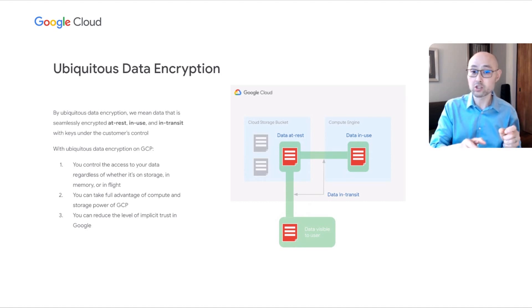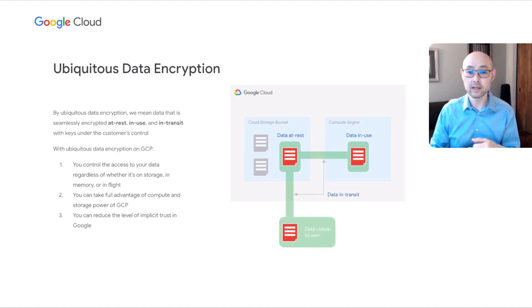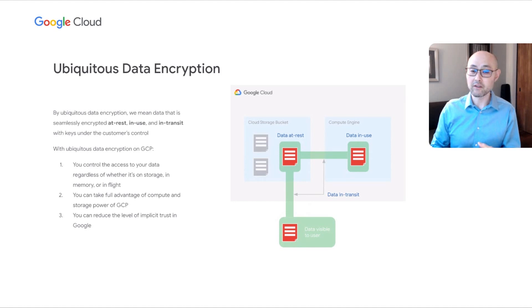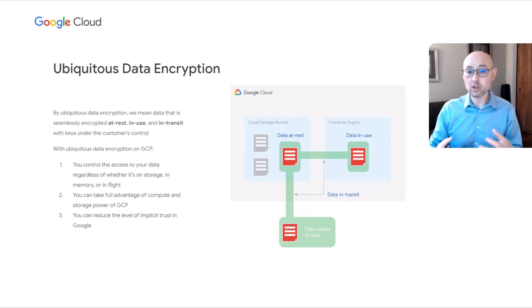Only the person who owns the data should have visibility to the actual plaintext. With ubiquitous data encryption, you get key advantages. Number one: you control your data regardless of whether it's in storage, memory, or in flight. Number two: you still get to take advantage of the power of the cloud — you can still use Cloud Storage, Compute Engine, and run all your workloads with very little or no limitations. All of this allows you to reduce the level of implicit trust you have in Google.